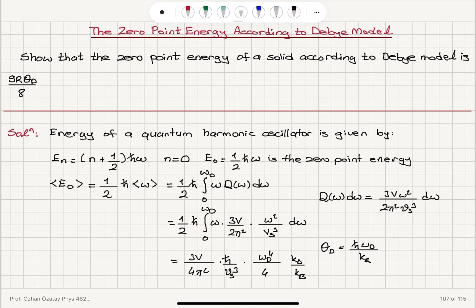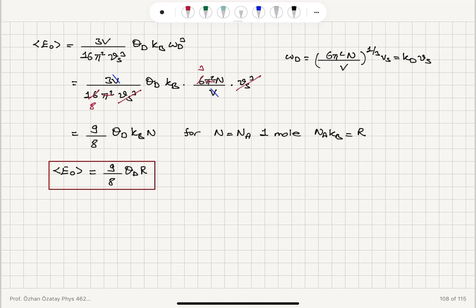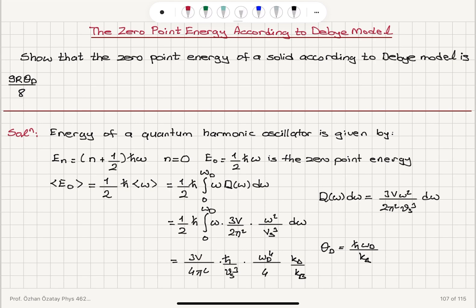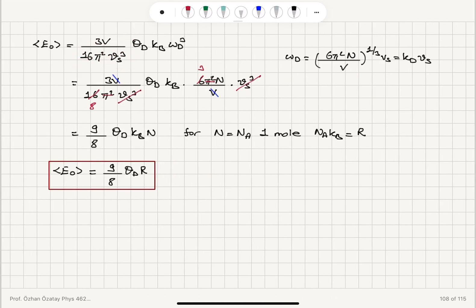The density of states is D(ω)dω = 3Vω²/(2π²v_s³) dω. When we perform this integral, everything comes outside except ω³ dω, which integrates to ω⁴/4, evaluated from 0 to ω_Debye, giving ω_Debye⁴/4. Multiplying top and bottom by k_B, we obtain θ_Debye from ℏω_Debye/k_B, leaving ω_Debye³ with the prefactor 3V/(16π²v_s³). Substituting ω_Debye = (6π²N/V)^(1/3) × v_s and simplifying, we obtain (9/8) θ_Debye k_B N, and for one mole, this equals (9/8) R θ_Debye — the desired result.